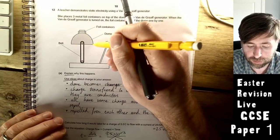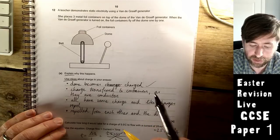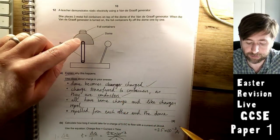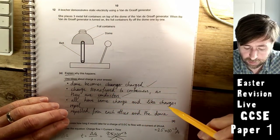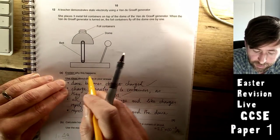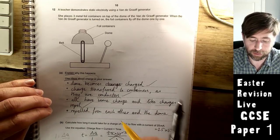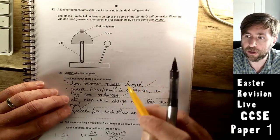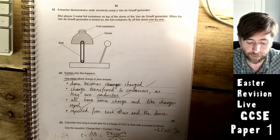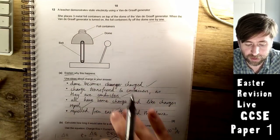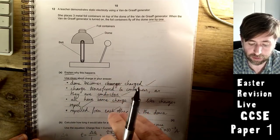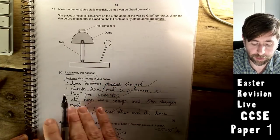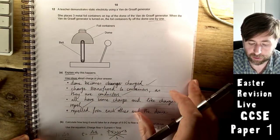The dome becomes charged. Charge is transferred to or from the dome. Got a mark there. The charge is transferred to the containers and you needed this because they are conductors. This is the second mark. All have the same charge and like charges repel. We've solved this by referring to charge, talking about how they become charged and then about these forces. They're repelled from each other, that's the one by one. And then finally the dome.